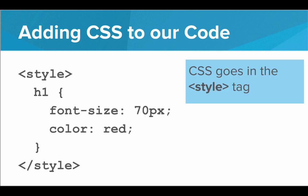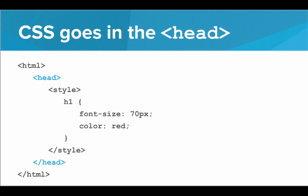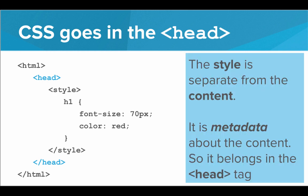How can we add CSS to our code? There's a special tag in HTML called the style tag. All we have to do is make an opening style tag and a closing style tag, and put all of our CSS rules inside. The style tag goes in the head of the HTML document, because the style is separate from the content — it is metadata, describing the content. Inside the body we have the actual content; in the head we have the metadata. Since the style is not really content but is describing the content, the style belongs in the head tag.